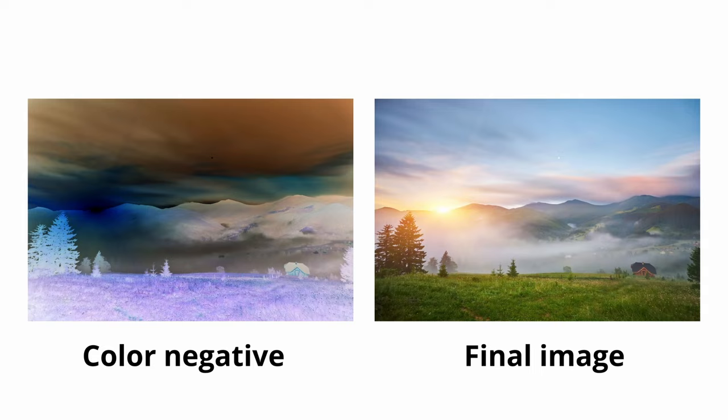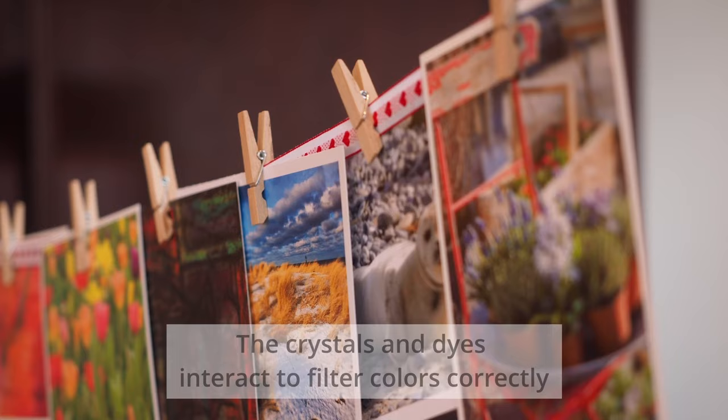To convert these color negatives to positives, each negative layer is overlaid with a dye layer of the complementary color. The crystals and dyes interact to filter the colors correctly. For instance, the magenta dye filters green light to produce a positive red layer.